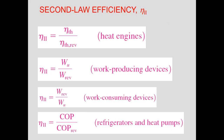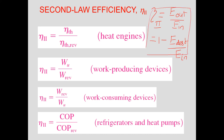Coming to the second law efficiency: to find out the second law efficiency, we need to account for the exergy during the process. Second law efficiency can be given as exergy out divided by exergy in, or it can also be expressed as 1 minus exergy destroyed divided by exergy input into the system. Based on exergy out, exergy in, and exergy destruction, we can calculate the second law efficiency.